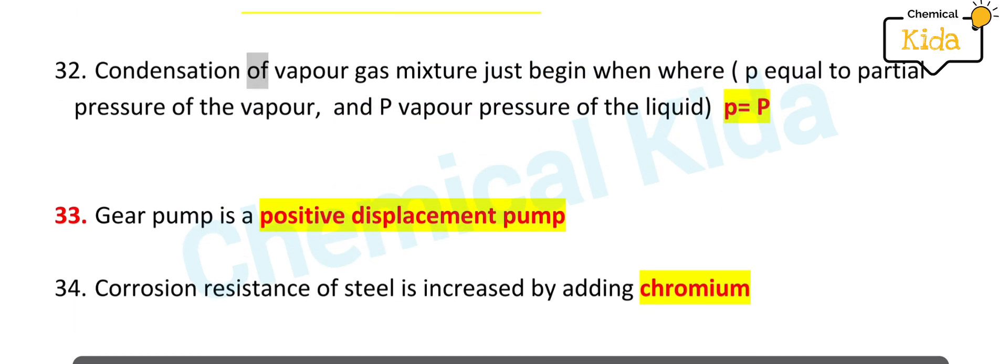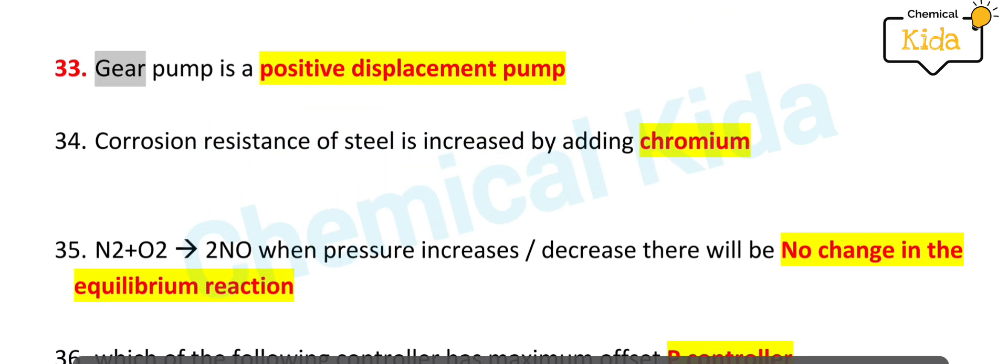Condensation of vapor gas mixture just begins when p equals partial pressure of the vapor, and P equals vapor pressure of the liquid, where p = P. Gear pump is a positive displacement pump.